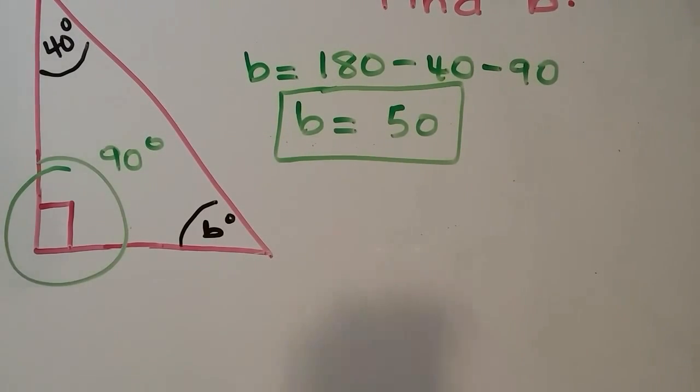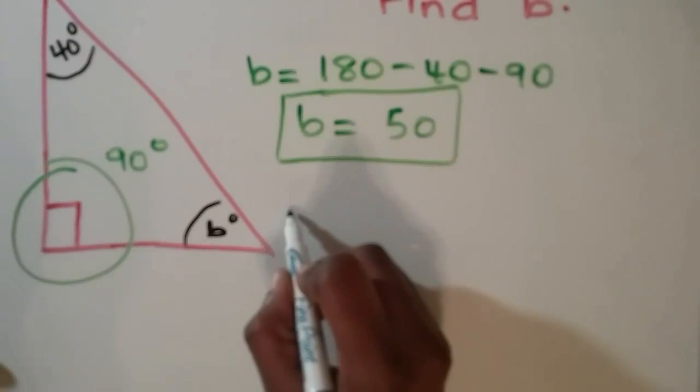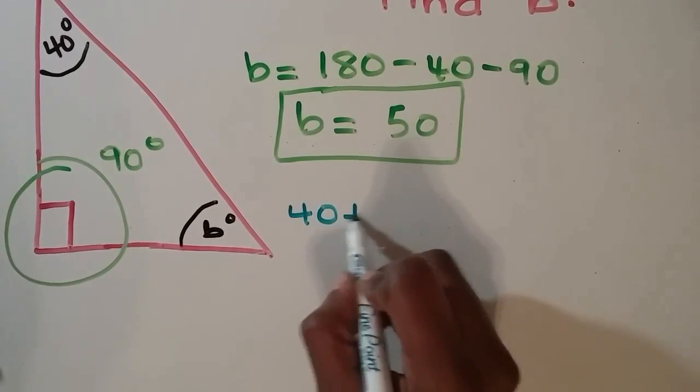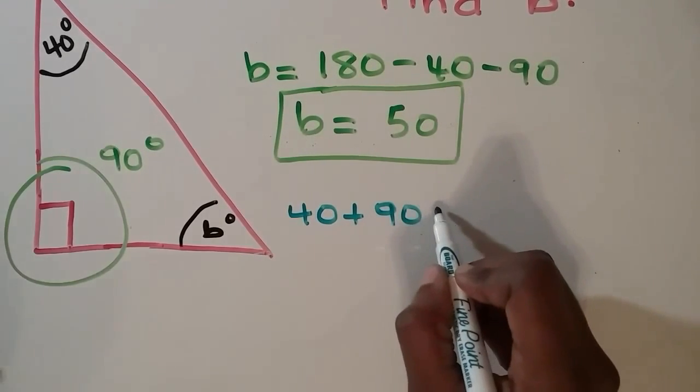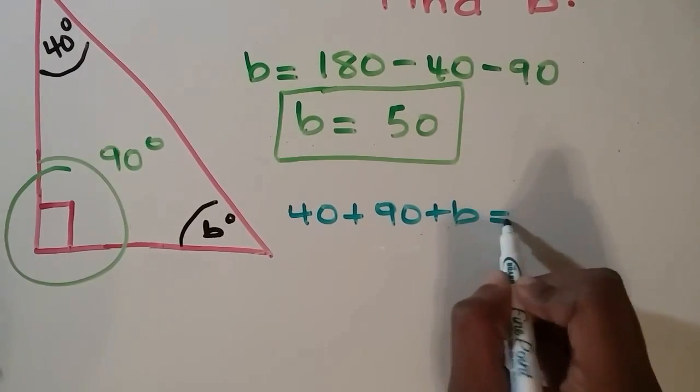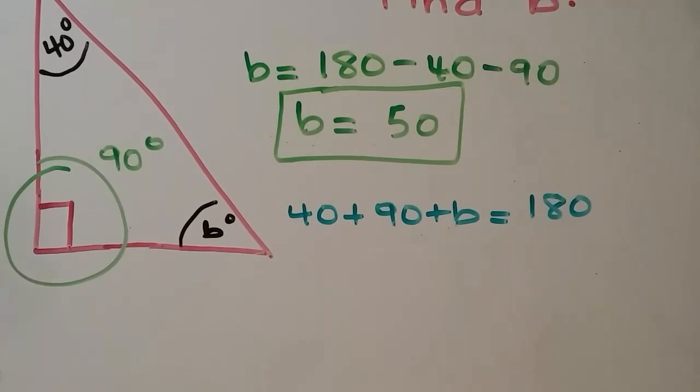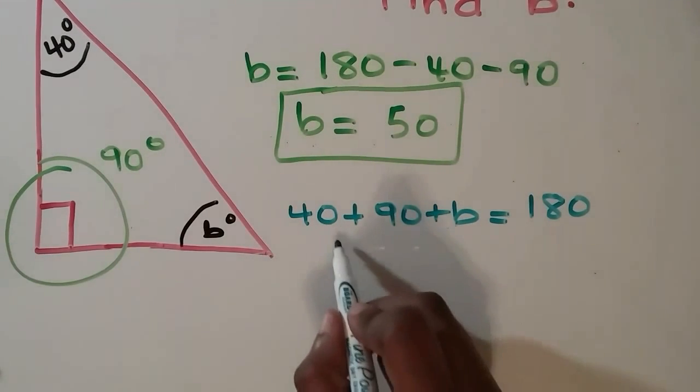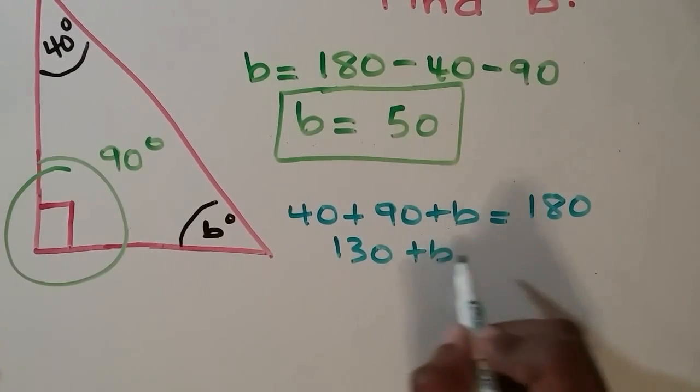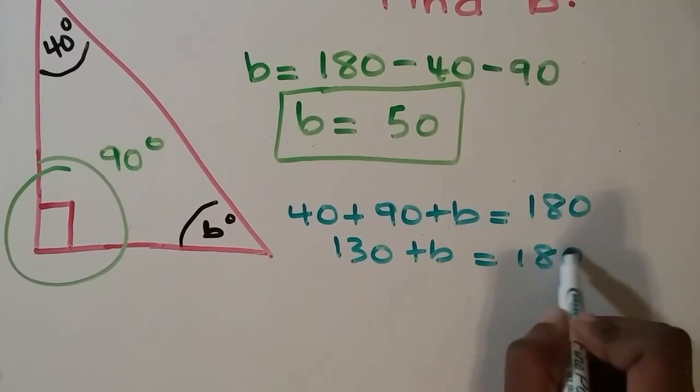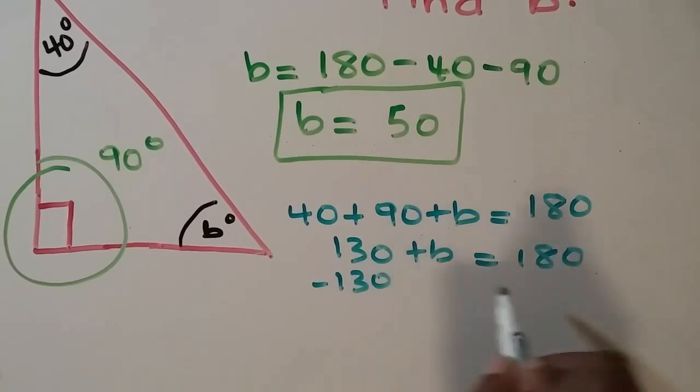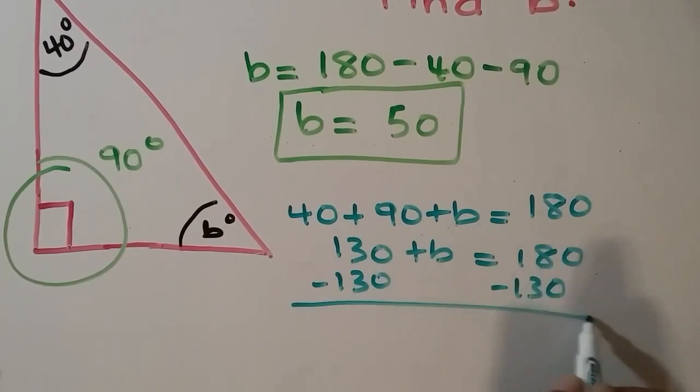The algebraic reasoning to this would be an equation. So 40 plus 90 plus b is equal to 180. And 40 plus 90 is 130. So we rewrite that as 130 plus b is equal to 180. Then we subtract 130 from both sides, and we get b is equal to 50.